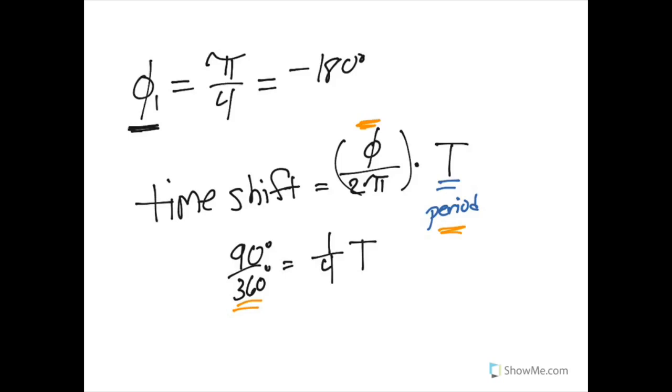That gives you the fractional portion that it is out of sync in terms of the period. And so if something is a whole wave apart, if it's a whole period apart, like 360 over 360, then the signals are actually completely in phase because they're overlapped and they're completely aligned with each other.